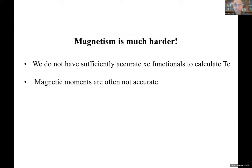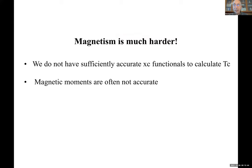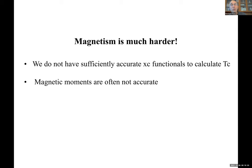For phonon-driven superconductors we really have a marvelous theory — it is the gold standard. The deep reason it works so well is that we have a small parameter; it is a truly controlled approximation. For magnetism we don't have that. Magnetism is much harder than superconductivity. We do not have sufficiently accurate exchange-correlation functionals to calculate the Curie temperature, and if you go beyond simple materials like iron, cobalt, and nickel, magnetic moments with standard functionals like LDA and GGA are often not accurate.